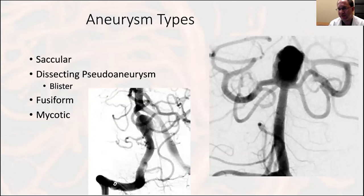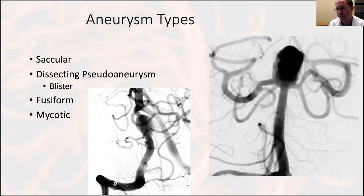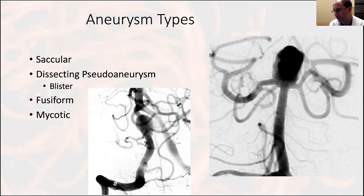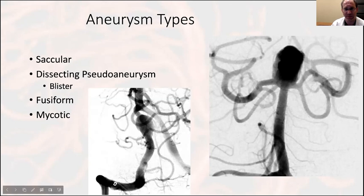I like to think of aneurysms stratified into four types. Saccular aneurysms occur at hemodynamic stress points and will be the focus of this discussion. Dissecting pseudoaneurysms, in extreme form, are blisters. Fusiform aneurysms — illustrated here is a fusiform vertebral aneurysm with the anterior spinal artery coming right out of it. And finally, mycotic or infectious aneurysms. The latter three won't be the primary focus.